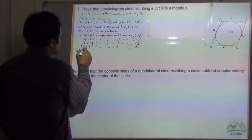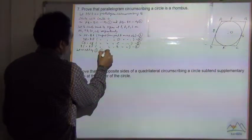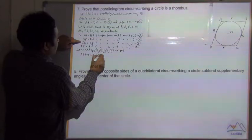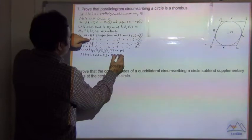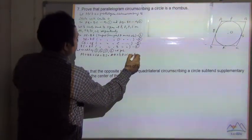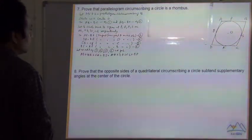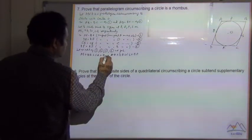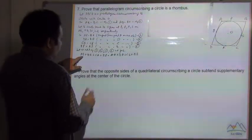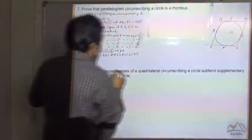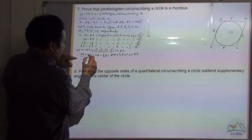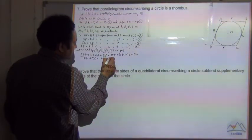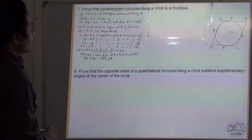Now let us add equations 3, 4, 5, and 6. So we get AP plus DR plus CR plus BS is equal to AQ plus DQ plus CS plus BP. Now AP plus BP equals AB, and DR plus CR equals DC, giving AB plus DC on the left side.